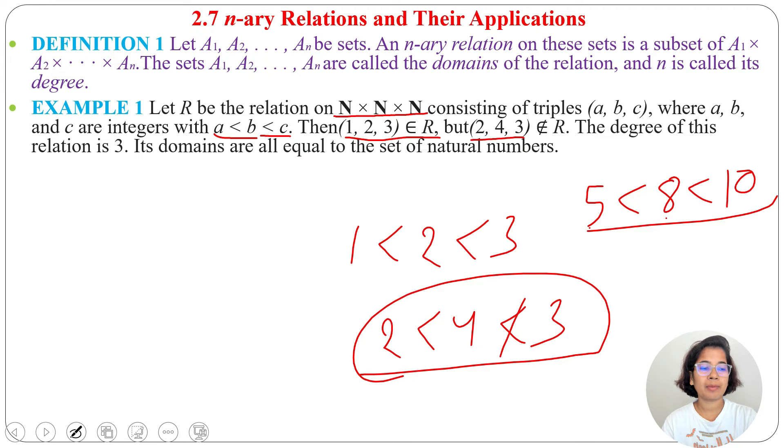Here, the degree of this relation is 3, as there are three sets, and the domains are all equal to the set of natural numbers.